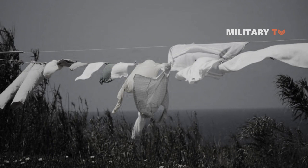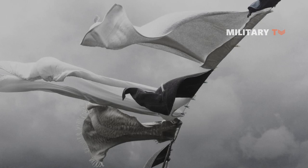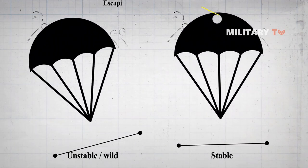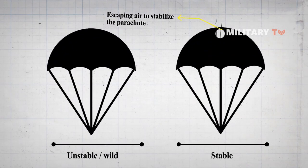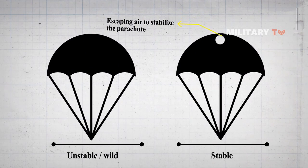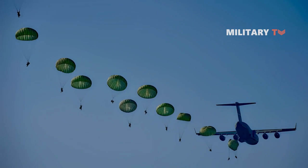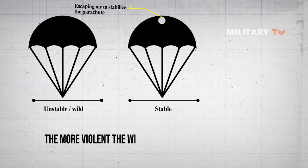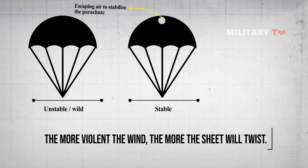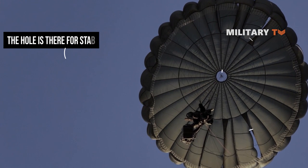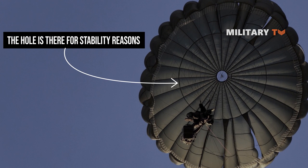When you see laundry hung out on the line on a windy day, it's easy to see why parachutes have holes. The wind will lift a huge sheet of fabric — it billows in the middle, resembling a parachute, thanks to a gentle breeze. As the wind increases, the sheet begins to move more wildly. One corner will first flap outwards, then the other, causing the sheet to start twisting in one direction, then the other. The more violent the wind, the more the sheet will twist, as each corner flaps out to relieve the wind's pressure. In short, the hole is there for stability reasons — to stop the parachute from flapping erratically and collapsing.